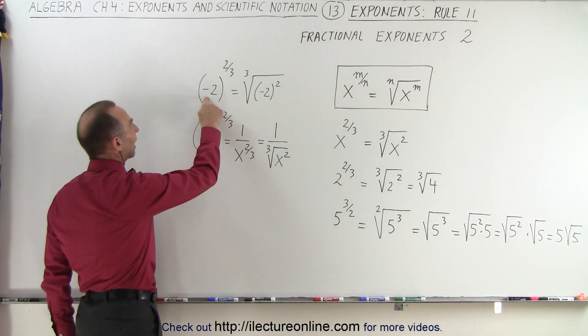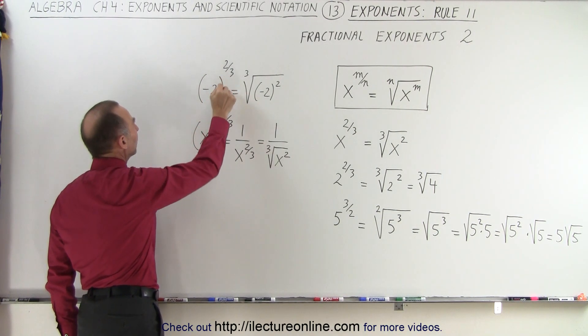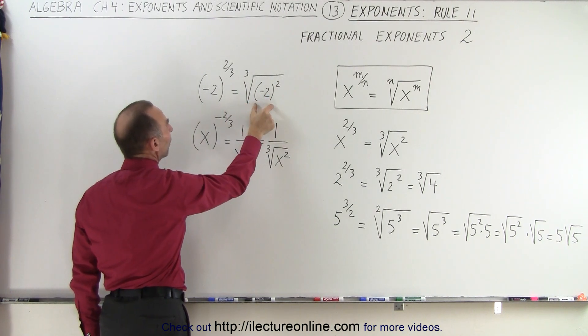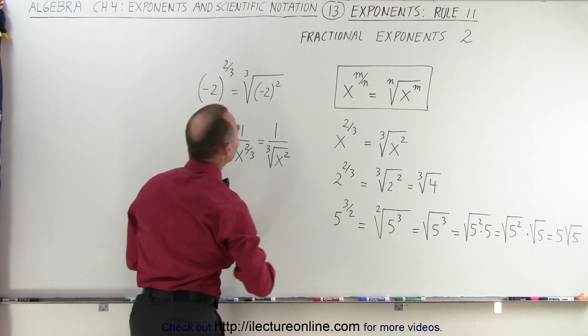What if we have a negative sign inside the parentheses, raised to the 2/3 power? The rule is still the same. It's the cube root of the quantity inside the parentheses squared.